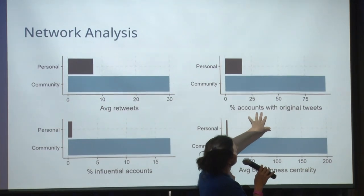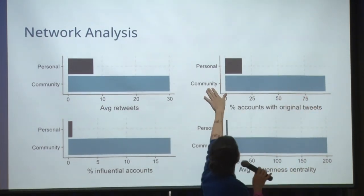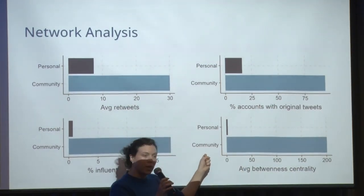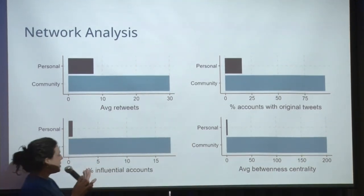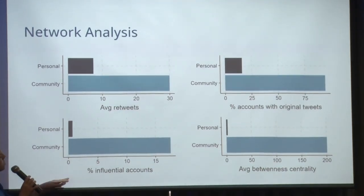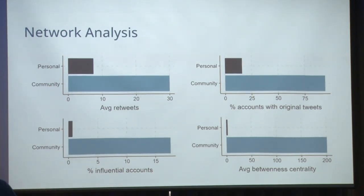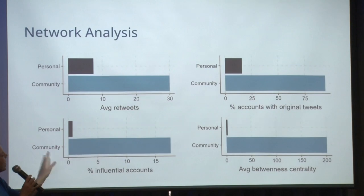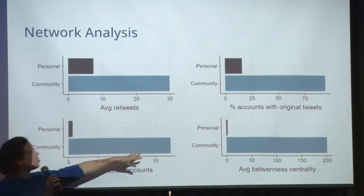The percentage of original tweets is a lot higher in community accounts than in personal accounts. Average betweenness centrality is also a lot higher, so community accounts are frequently in the path between two individual users. For influential accounts, we measured how many individual accounts retweeted a given account — counting each user only once regardless of how many posts they retweeted. The percentage of influential accounts in the community group is a lot larger than in the personal accounts group.